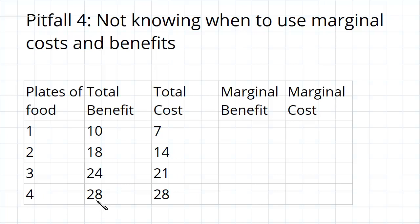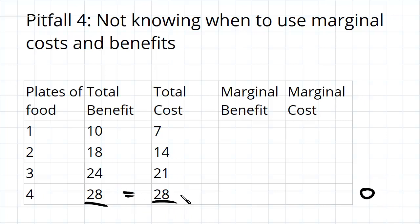It's very tempting to say, okay, for four plates we've got a total benefit of $28 and a total cost also of $28. These two are equivalent — we've got a surplus of zero — and if the surplus is greater than or equal to zero, then I will make the decision, so I'll order four plates of food because it's worth it. It's worth $28, I'll pay $28.